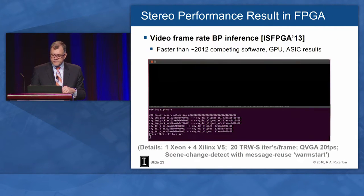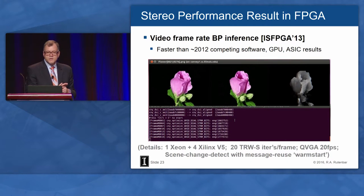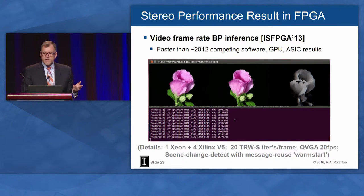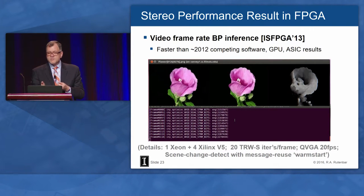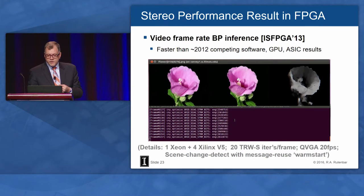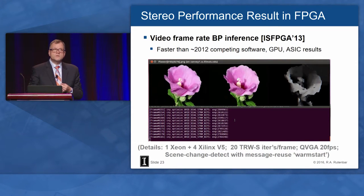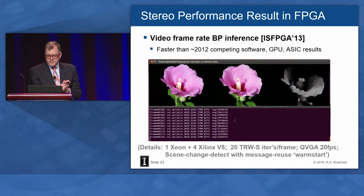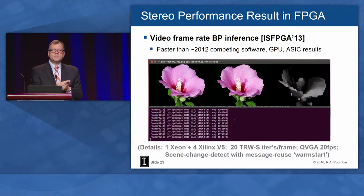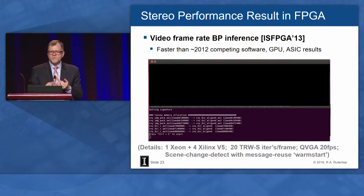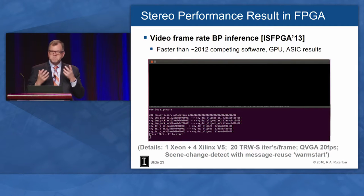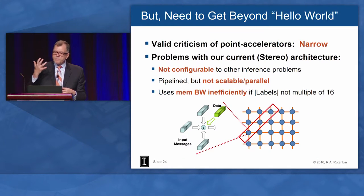We built it on an FPGA, and here is a live video — left camera, right camera — with a depth map being computed completely in hardware on the right. We did this in 2012 and published it in 2013. It's running on four Xilinx FPGAs and a Xeon doing housekeeping. When we published this it was like the fastest BP anything anybody had ever done — faster than software, faster than GPUs, and even faster than some ASICs — which suggests that if you build the architecture right, good things can happen.